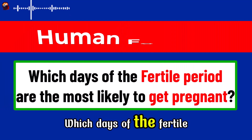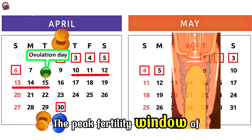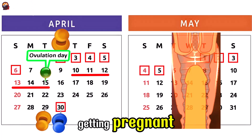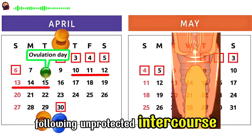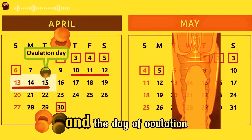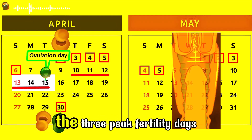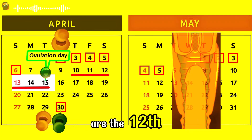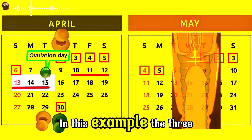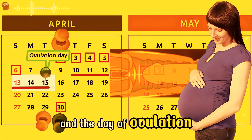Which days of the fertile period are the most likely to result in pregnancy? The peak fertility window of each cycle — the time when a woman has the greatest chance of getting pregnant following unprotected intercourse — is concentrated in the 2 days preceding ovulation and the day of ovulation itself. Therefore, for a 28-day cycle, the 3 peak fertility days are the 12th, 13th, and 14th days of the cycle.